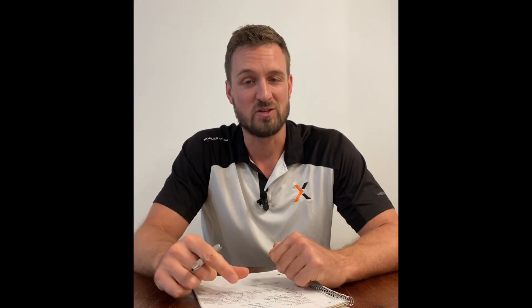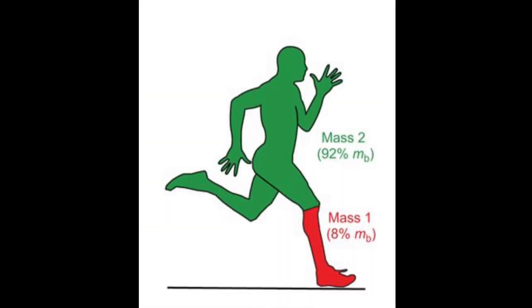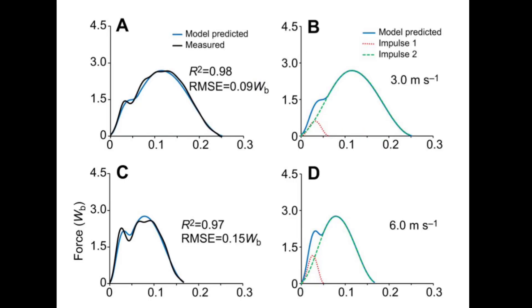In the method where you just have air time and ground time, you're basically considering the body to be one mass bouncing off the ground, giving you that sine curve — but that's limited in accuracy. In the two mass model, you're considering the body to be two masses: the foot and lower leg, and then everything else. It's collecting data on those two masses, using that to estimate two different impulses on the ground, and combining those impulses to generate a predictive vertical force signature.